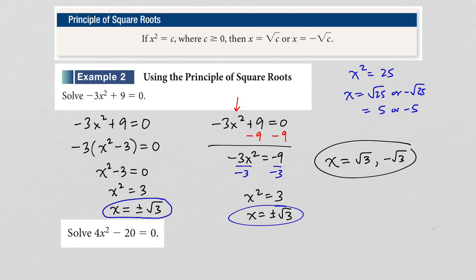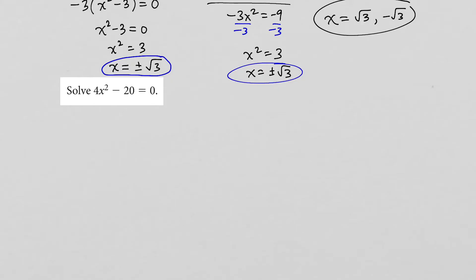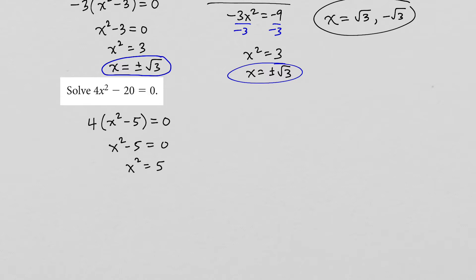Let's take a look at the next example, which is very similar. I'm going to factor out the 4, which gives us x squared minus 5. Since 4 is never equal to 0, we set x squared minus 5 equal to 0. Adding 5 to both sides gives x squared equals 5, which means x must be equal to positive or negative square root of 5. Those are our two answers.